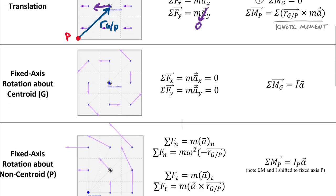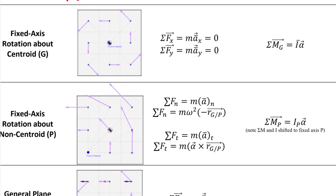For fixed-axis rotation about the centroid, the centroid is a non-moving pin with zero acceleration, so both force sums equal zero. Summing moments about the centroidal point gives simply I-bar times alpha. Summing about any other point is not advisable — if the pin is at the centroid, pin reaction forces pass through it, eliminating their moment contribution, so summing about the centroid is the most sensible choice.